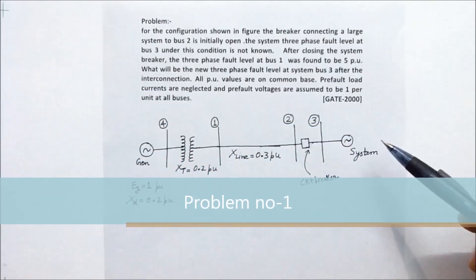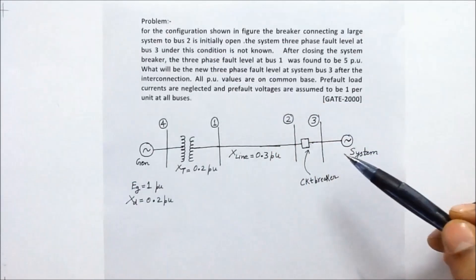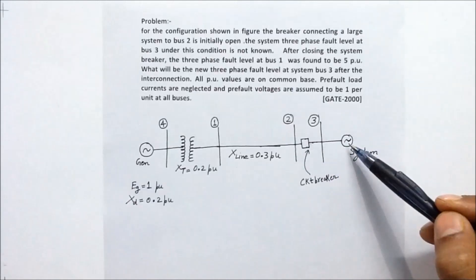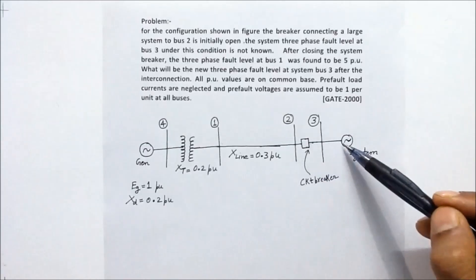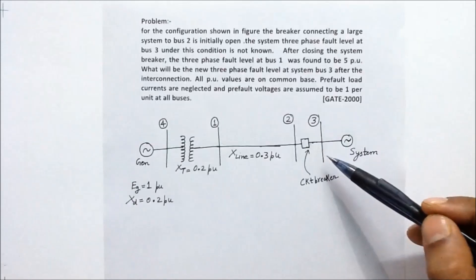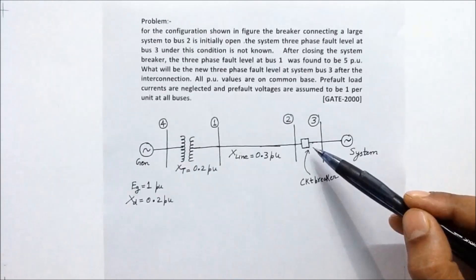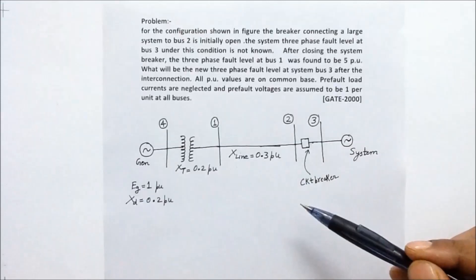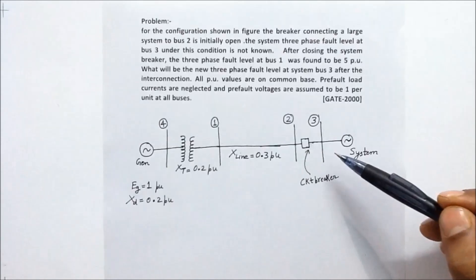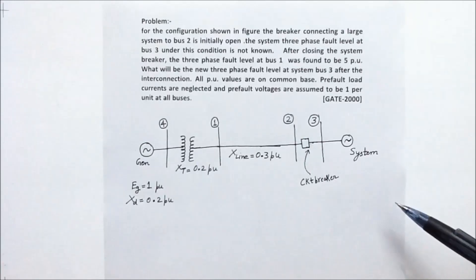I am going to solve this problem. Before solving, let me read it carefully. For the configuration shown in the figure, the breaker connecting a large system to bus 2 is initially open. The system 3-phase fault level at bus number 3 under this condition is not known. After closing the system breaker, the 3-phase fault level at bus number 1 was found to be 5 per unit. What will be the new 3-phase fault level at system bus 3 after the interconnection? All per unit values are on a common base, pre-fault load currents are neglected, and pre-fault voltages are assumed to be 1 per unit at all buses.